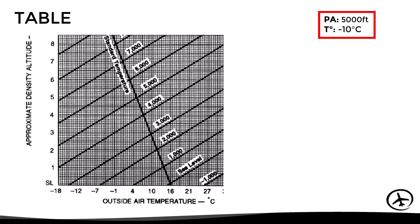Finally, using the graph: the first step is to identify the line representing 5,000 feet of pressure altitude, highlighted in yellow. Then in the lower part we locate the current air temperature of minus 10 degrees and draw a vertical line until intercepting the 5,000 feet line. We then draw a horizontal line to the left and read the resulting density altitude, which is approximately 3,150 feet.